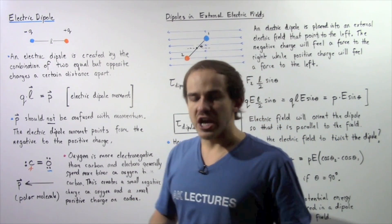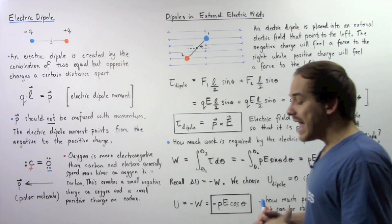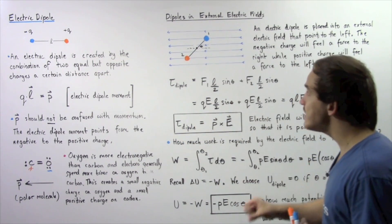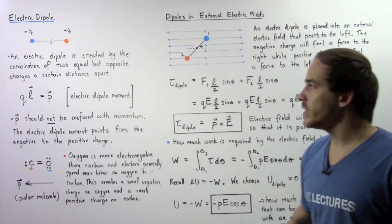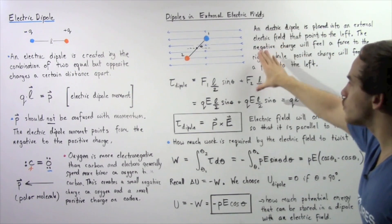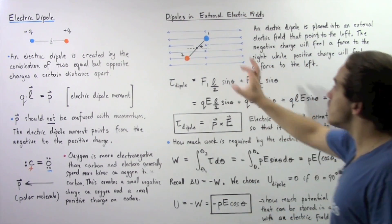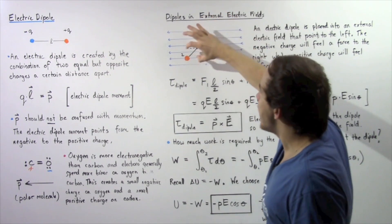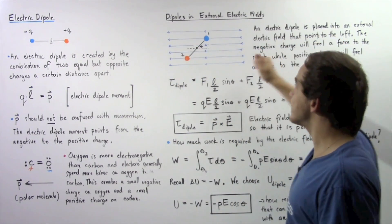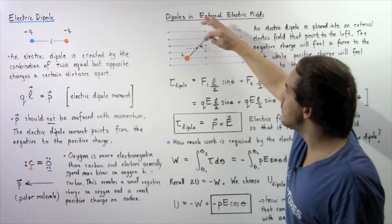Recall that whenever we place an electric charge into an electric field, that charge feels a force given by the product of the charge and the electric field. Now let's place an electric dipole into a uniform electric field. The dipole has a negative charge (charge one) and a positive charge (charge two) separated by distance L. The electric field points from right to left and is constant, shown by the light blue arrows. The angle that L makes with the x-axis is given by angle theta.